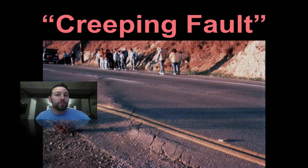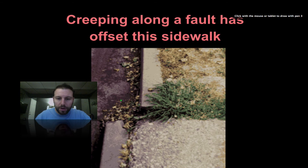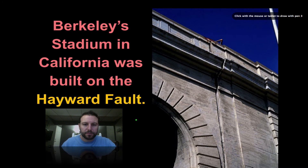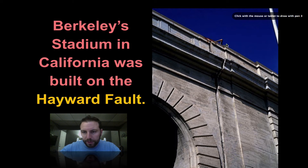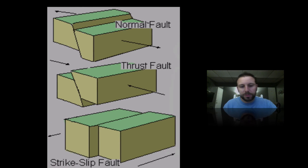Here's an example of a creeping fault. When you build roadways over these faults and there's very slow movement of those plates, we can see buckling of road surfaces. Even sidewalks can start to get offset, and buildings too — you can see there's an offset in this whole building, leading to a number of visible effects from these faults.